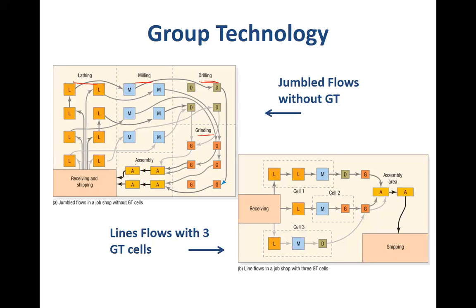On the right-hand side, the layout has been restructured so that there are three different cells — cell one, cell two, and cell three. These cells are focused on products that are similar, or families of products with similar processing requirements. Cell one has two lading machines followed by a milling machine. Cell two has a milling machine followed by a grinding machine. Cell three has a lading machine followed by a milling machine and then a drilling machine. There is still some jumbled flow, but also quite streamlined flows depending on the family of products being made. That's the example of a group technology cell which facilitates lean systems.